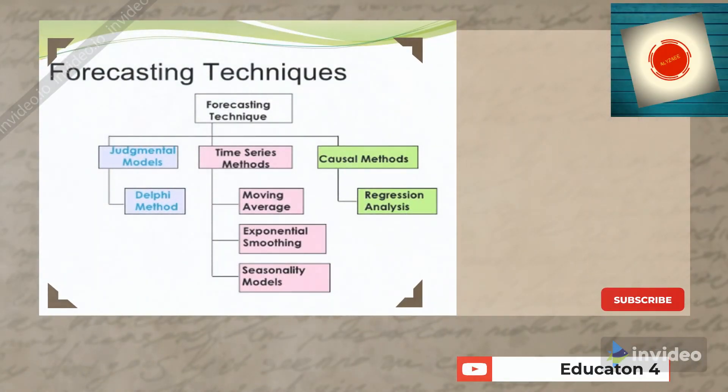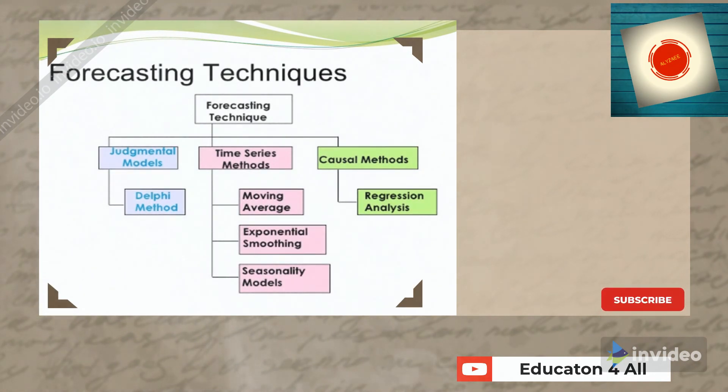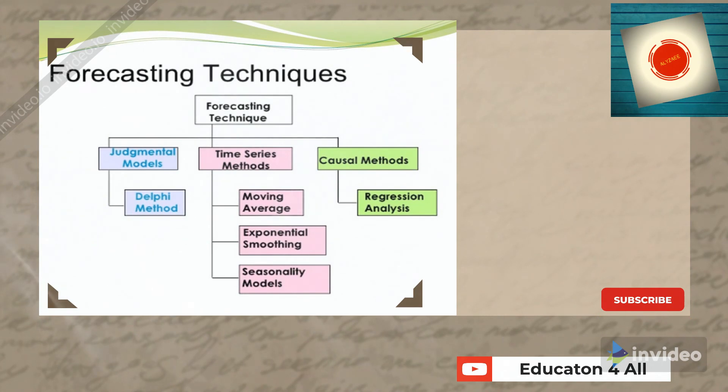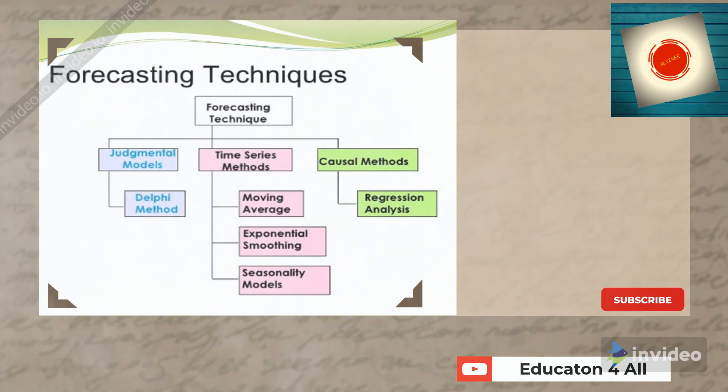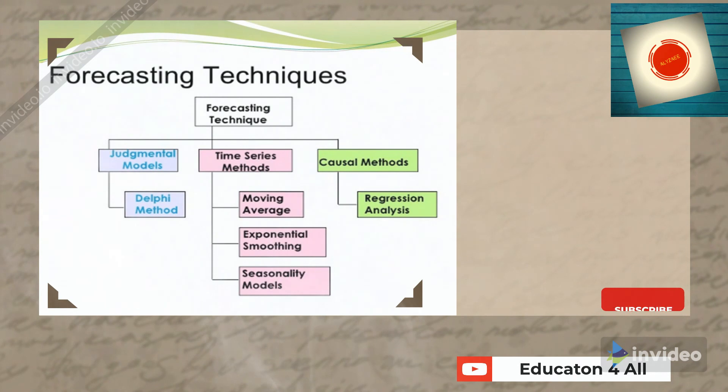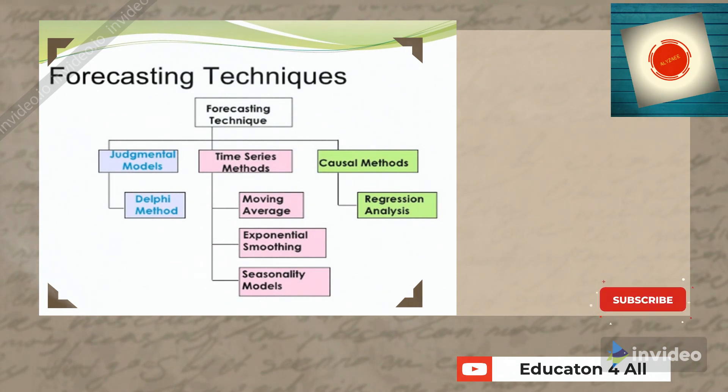In forecasting techniques shown in the table, there are different methods being used. Judgmental models include the Delphi model. Time series methods include moving average, exponential smoothing, and seasonality models. The causal method of regression analysis is the most famous technique used for forecasting in academic research work.